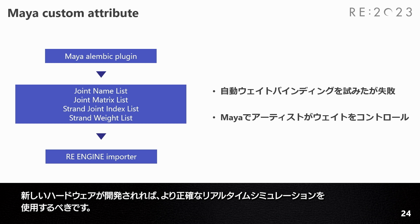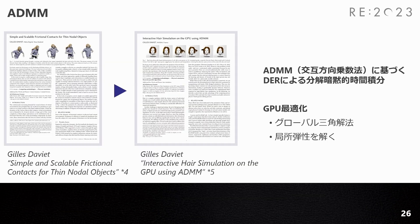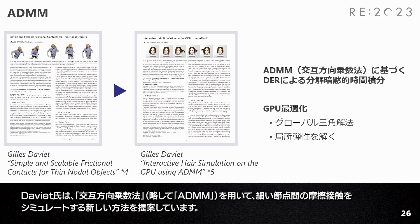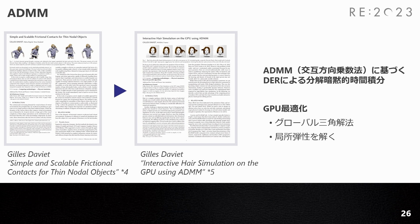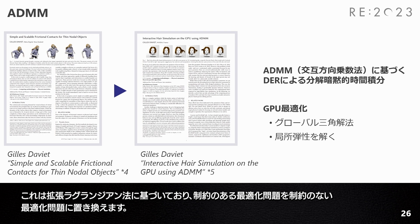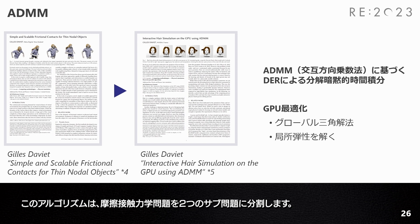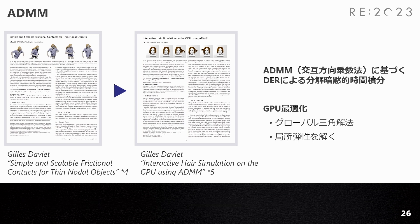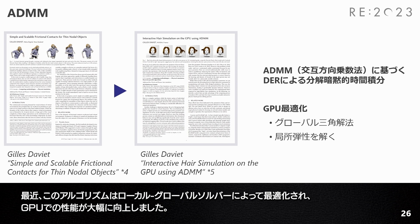Naviate presents a novel method for simulating frictional contacts between thin nodal objects using the Alternating Direction Method of Multipliers, or ADMM for short. This algorithm solves convex optimization problems by breaking them into smaller pieces, each of which are then easier to handle. It is based on the augmented Lagrangian method, which replaces a constrained optimization problem with an unconstrained one using a penalty term and a Lagrangian multiplier term. The algorithm splits the frictional contact dynamics problem into two sub-problems that are much easier to solve individually. Recently, the algorithm was also optimized through a local-global solver that largely improved GPU performance.